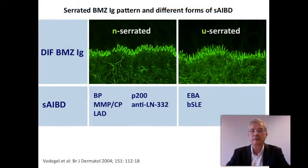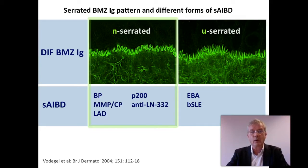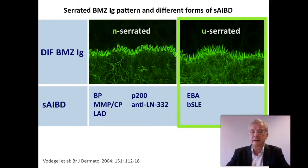In this overview of the n-serrated and u-serrated patterns and the different forms of sub-epidermal autoimmune blistering diseases, the n-serrated pattern is seen in BP, MMP, CP, LED, anti-p200 pemphigoid, and anti-laminin 332 pemphigoid, while the u-serrated pattern is seen in EBA and bullous SLE.